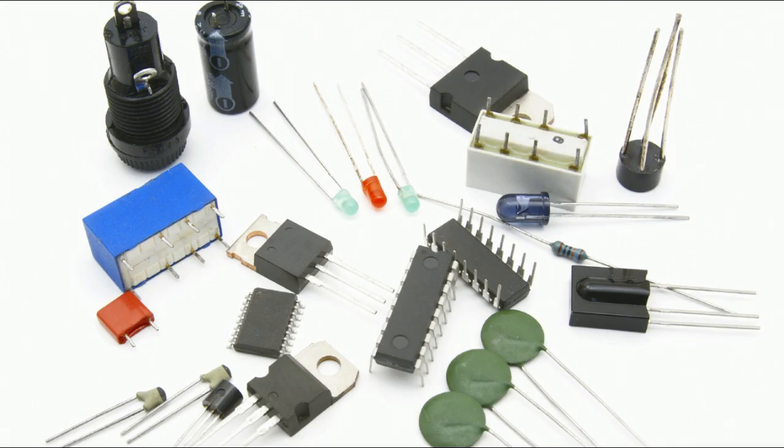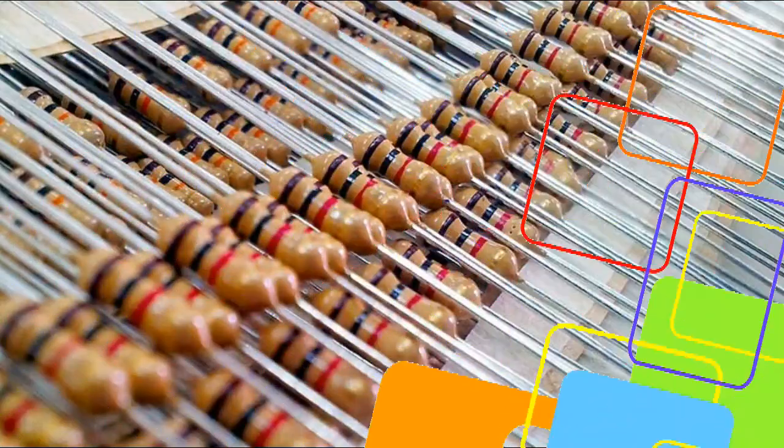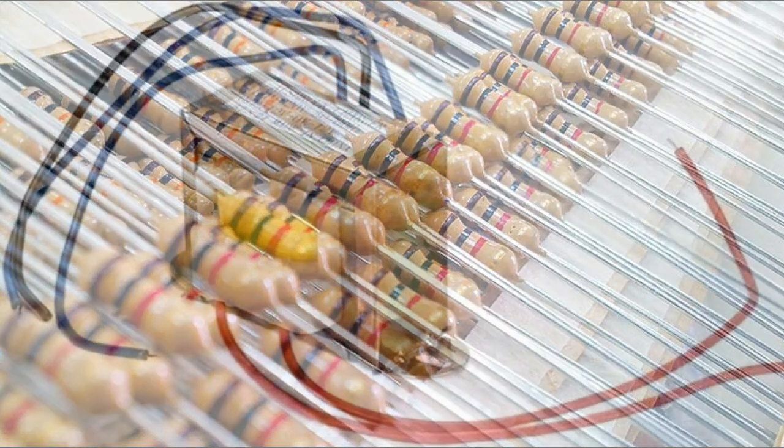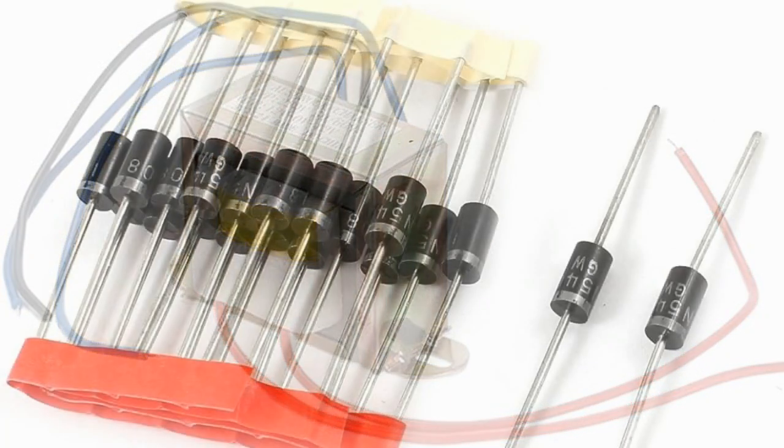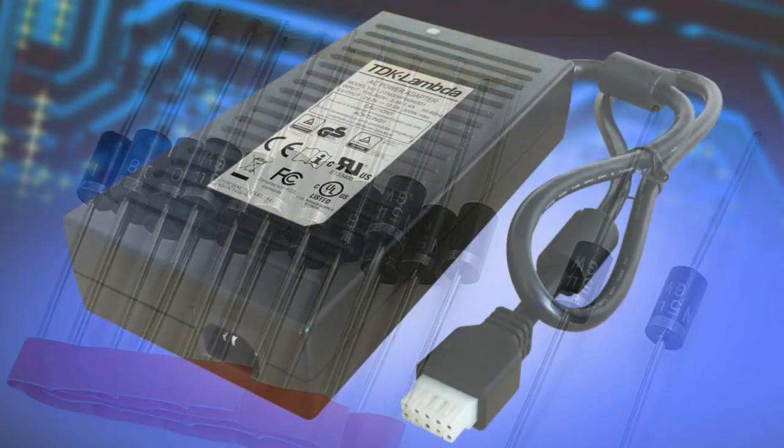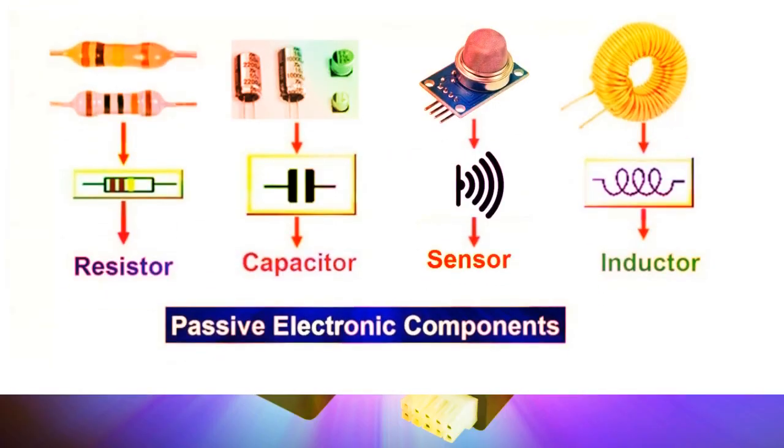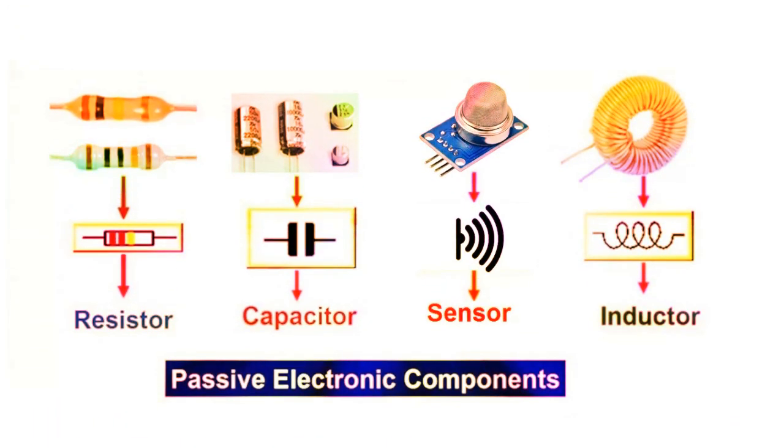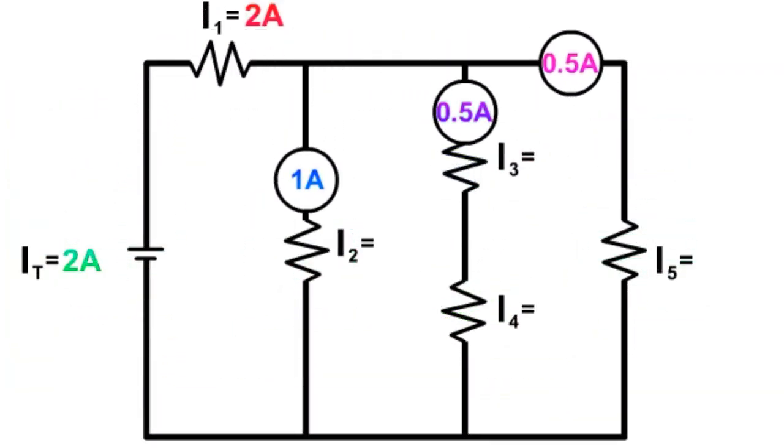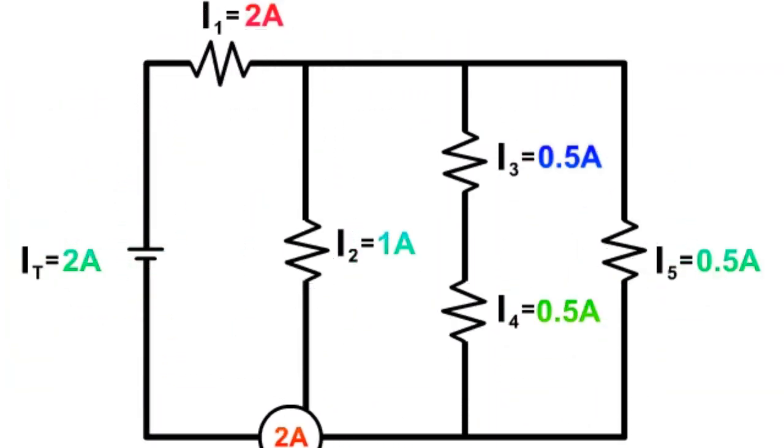What are passive components? Like resistors, transformers, and diodes, they don't need an external power source to function. These components use some other property to control the electrical signal. As a result, they only require the current traveling through the connected circuit.